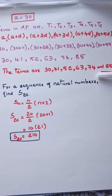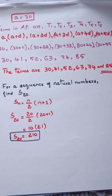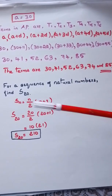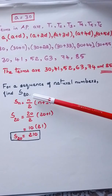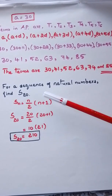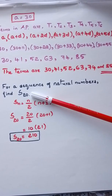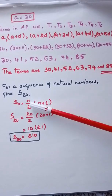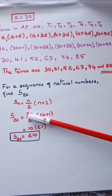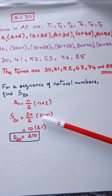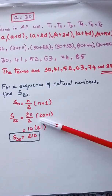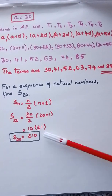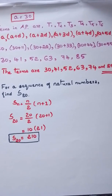Now let's see another sum: for a sequence of natural numbers, find S20. We use the formula Sn = n(n+1)/2. Substituting n = 20: S20 = 20×21/2 = 10×21 = 210.